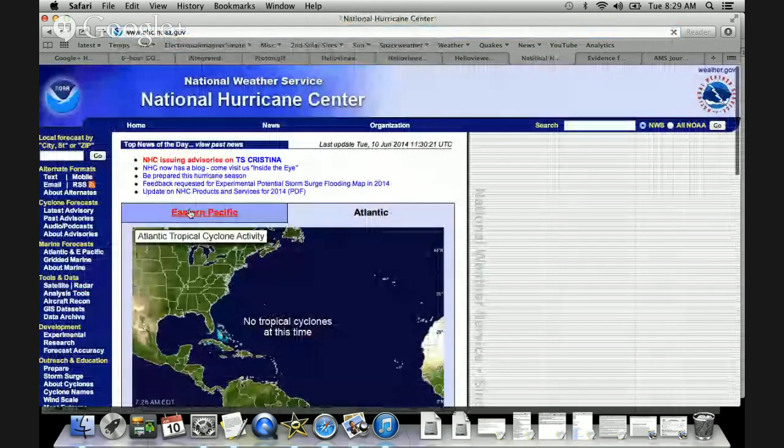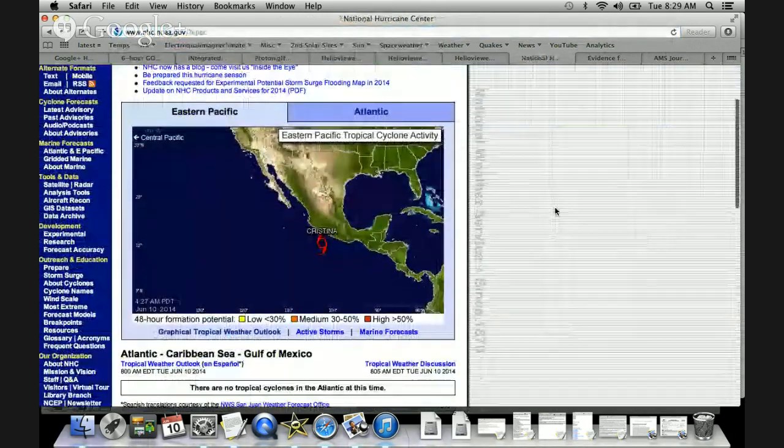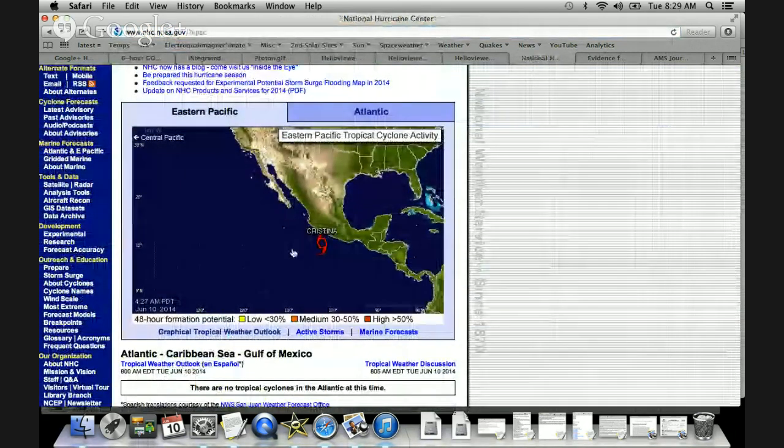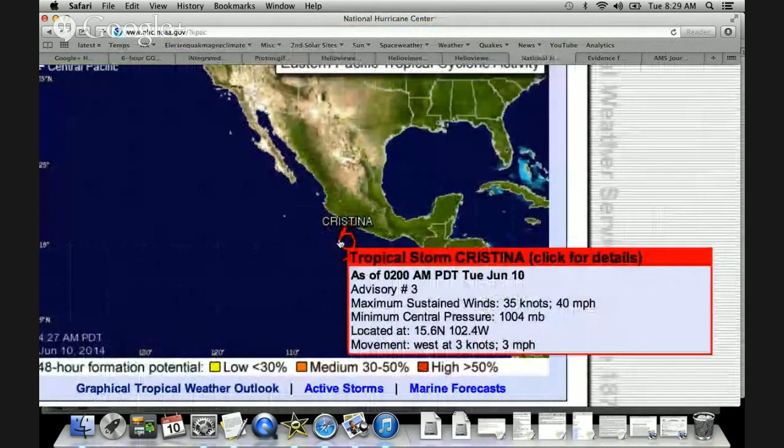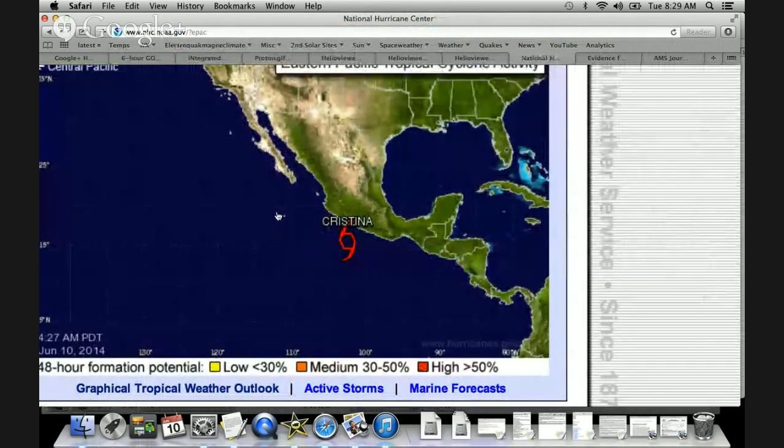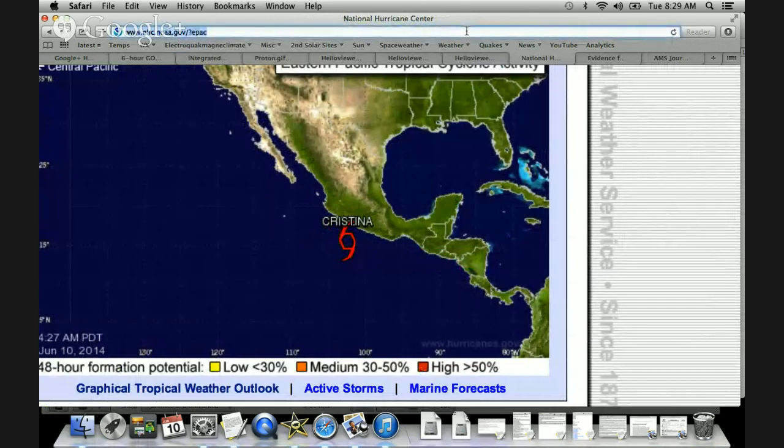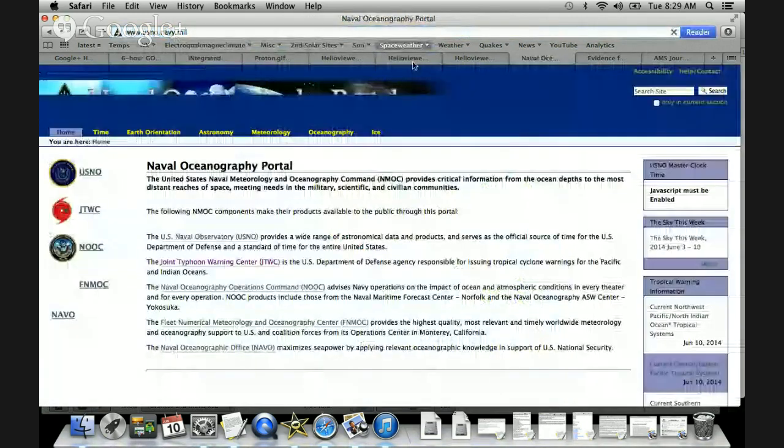which has actually already produced tropical storm Christina here in the Atlantic, here in the Pacific, excuse me, the far eastern Pacific. This is supposed to track over to the west, and then maybe come slightly north. But in addition to that, excuse me, we have another one in the Indian Ocean.